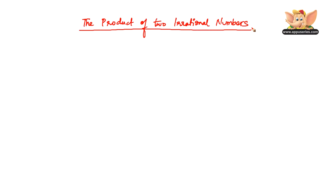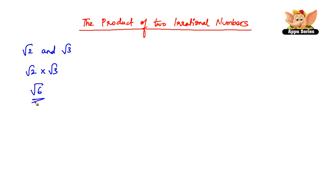In this video, let us see the product of two irrational numbers. Let us consider a quick example. Let us find the product of root 2 and root 3. Root 2 into root 3 is root 6, which is irrational.